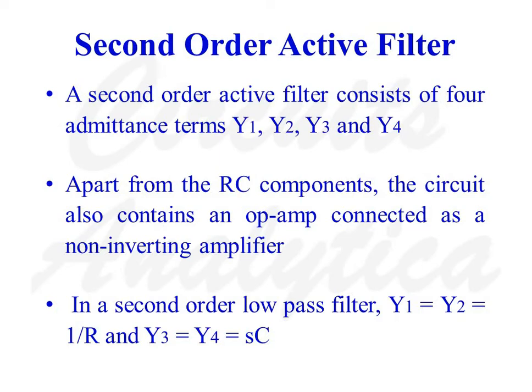In a second-order low-pass filter, Y1 = Y2 = 1/R and Y3 = Y4 = SC. In a second-order high-pass filter, Y1 = Y2 = SC and Y3 = Y4 = 1/R.